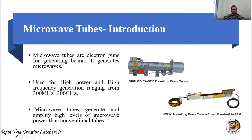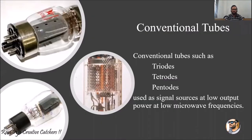So before microwave tubes, what tubes were used? What were the disadvantages of those tubes and why we have opted for microwave tubes? Before microwave tubes, we used conventional tubes — also called traditional tubes or old method tubes. These conventional tubes come in three types.